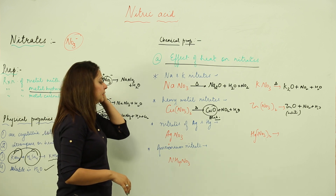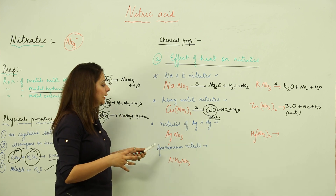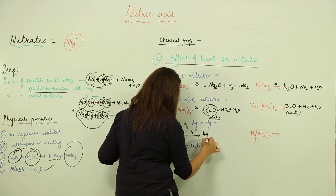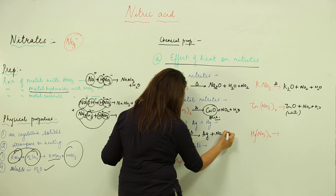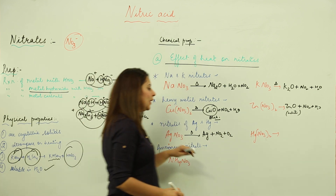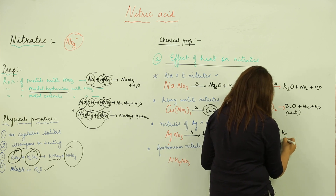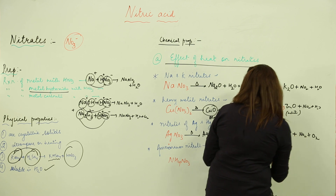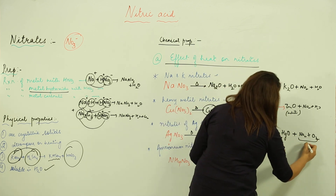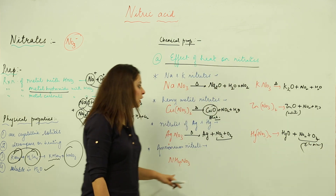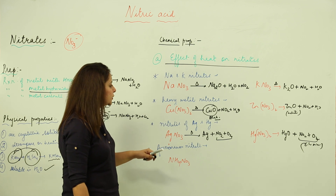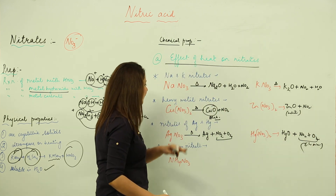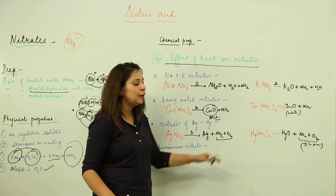Silver and mercury, although heavy metals, decompose differently. Heating AgNO3 gives silver metal (Ag), NO2, and O2 — the silver formed creates a silver mirror. Heating mercury nitrate gives mercuric oxide, NO2, and O2. Note: there is no H2O in these products because there is no hydrogen in these compounds.